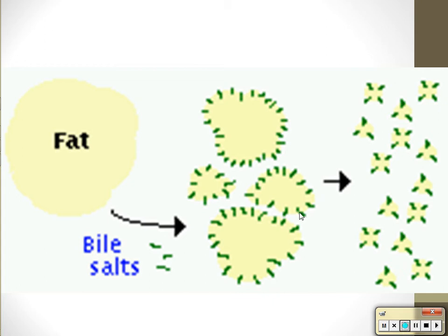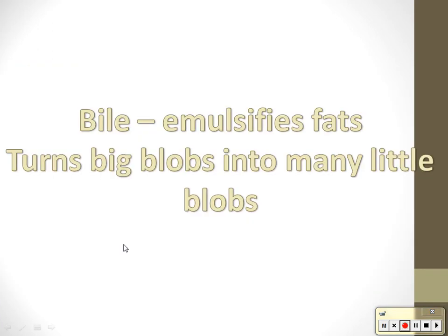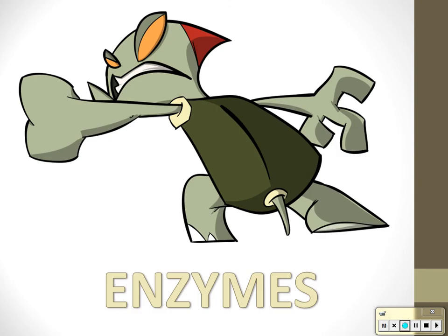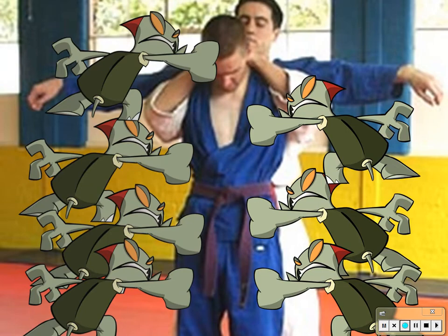Bile has emulsification properties. If you try to chew oil, it turns into little droplets then back into a big drop of oil. We need something to keep the oil separated — that's what bile does. Bile separates the fat into little pieces and circles them so they can't stick back together — that's emulsification. It increases surface area for enzymes to work on. Bile is made by the liver and stored in the gallbladder.